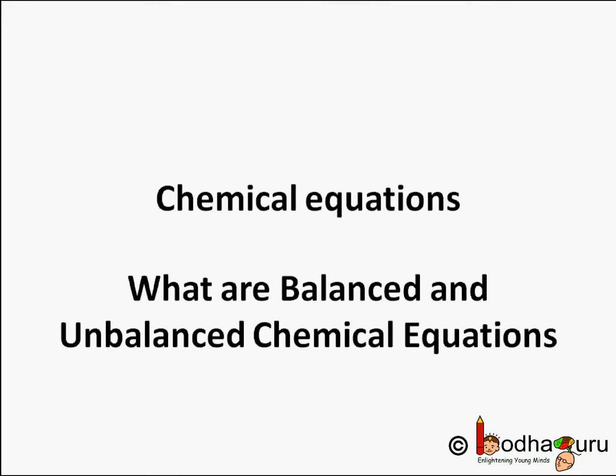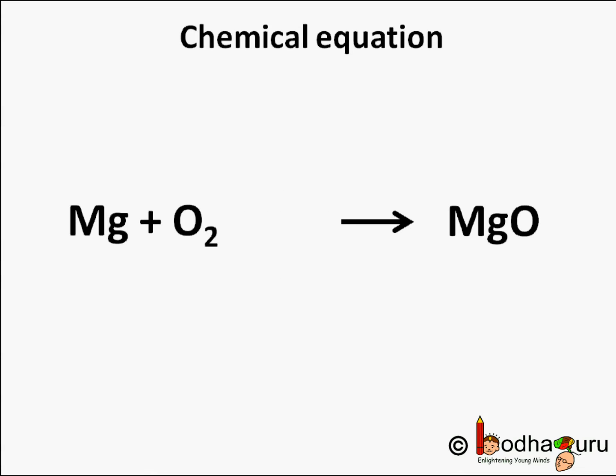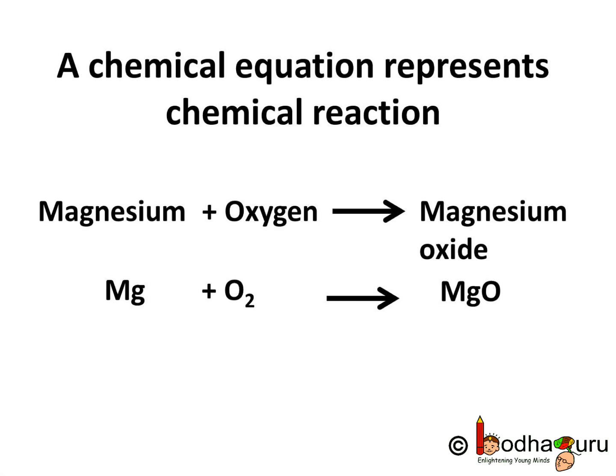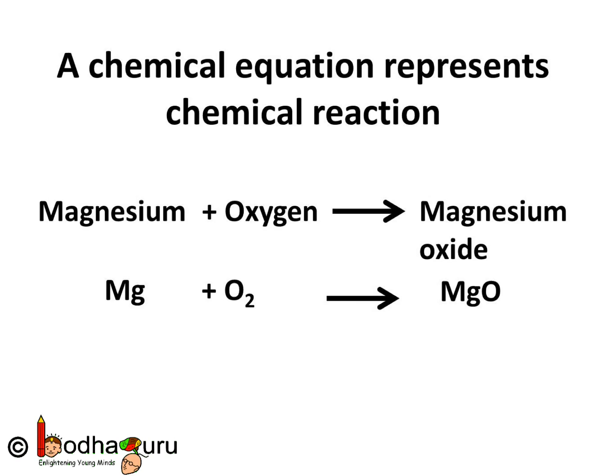Hello everyone. Now we already know about the chemical equation which represents the reactants as well as products symbolically. So let us learn about balanced and unbalanced equations. Here we have a chemical equation which represents the burning of magnesium ribbon, which leads to giving out a dazzling white light and forming a white powder. Magnesium plus oxygen gives magnesium oxide — that is Mg plus O2 gives MgO.